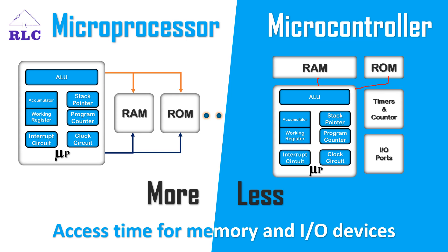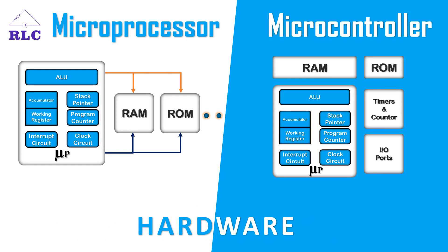The third difference is hardware. A microprocessor requires memory, I/O ports, serial communication, and other peripherals to be connected externally, so it requires more hardware and is bulkier in size. In contrast, a microcontroller has all the required peripherals for a particular application integrated in a single chip, which reduces hardware requirements and makes it compact in size. So, a microprocessor requires more hardware and a microcontroller requires less hardware.